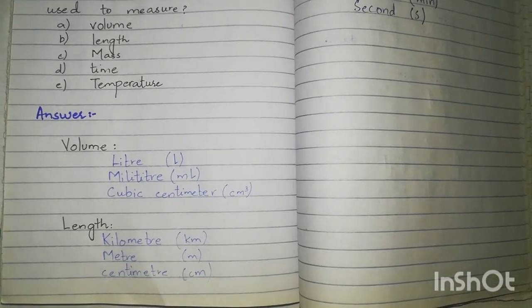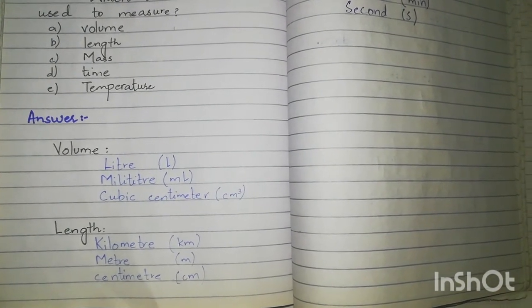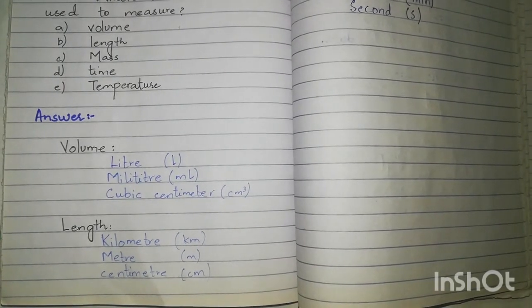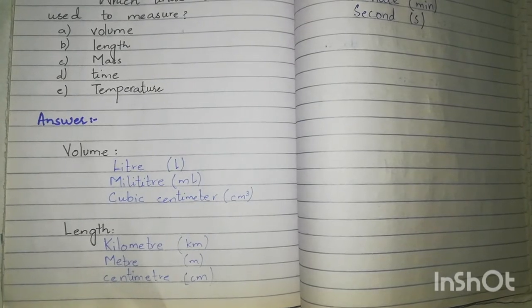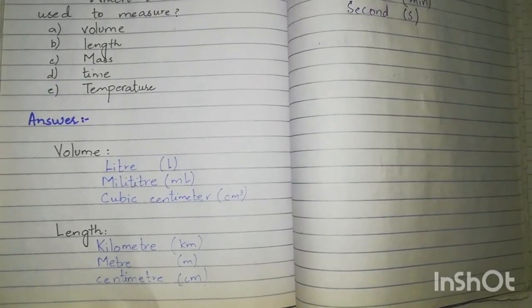Phir us ke baad homare paas length. Ab length ko measure karne ke liye homare paas kilometer unit hota hai, meter hota hai, or centimeter hota hai. Kilometer ko hum km se represent karthay hai, meter ko m se, and centimeter ko cm se.